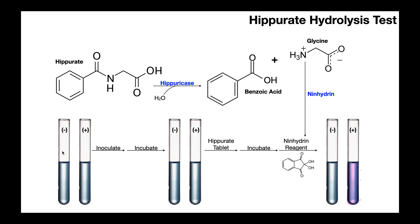Here's the general reaction scheme. We start with two media samples: the one on the left is eventually going to be negative, and the one on the right is going to be positive, but they're identical at this point. We inoculate each with our bacteria and incubate — this step is just to grow up the bacteria. The left tube has one species, the right tube has another.